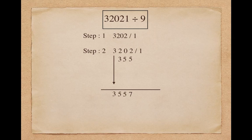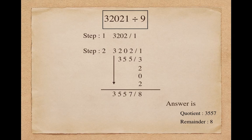And to find the remainder, make the summation of all the digits of the dividend: 3 plus 2 plus 0 plus 2 plus 1 makes 8. So here the answer is quotient 3557 and remainder 8.